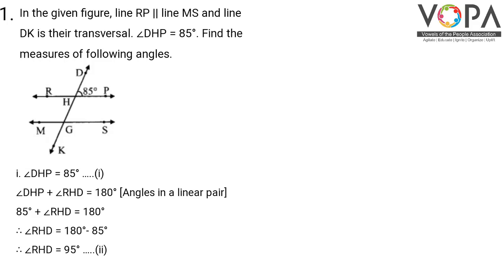For the first one, angle DHP is given as 85 degrees. Angle DHP plus angle RHD is equal to 180 degrees because they are angles in a linear pair. Substituting, 85 plus angle RHD equals 180. Taking 85 to the right-hand side, angle RHD is equal to 180 minus 85, that is 95 degrees.